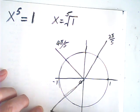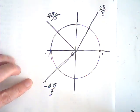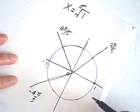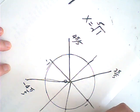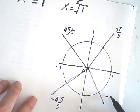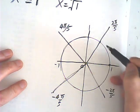This is negative 4 pi over 5. And this root is negative 4 pi over 5. So we have 5 roots.